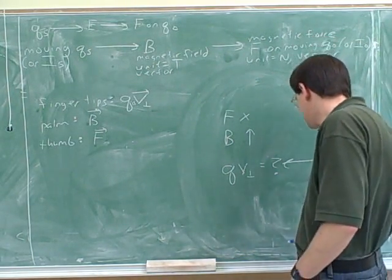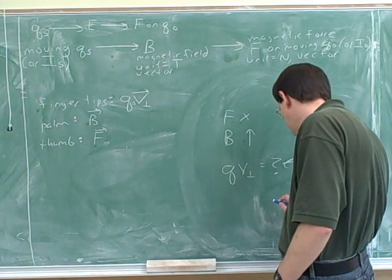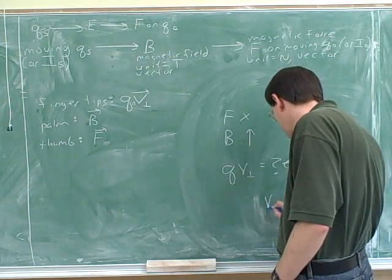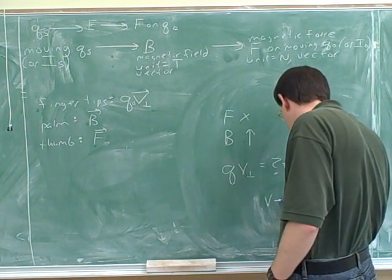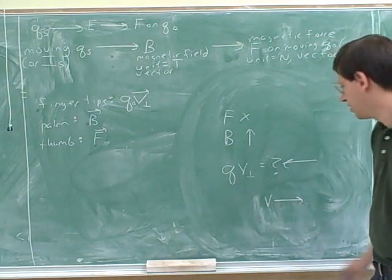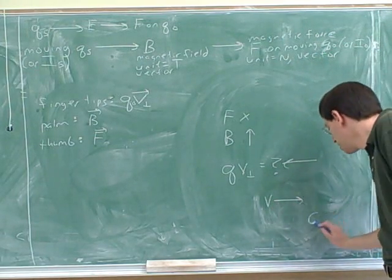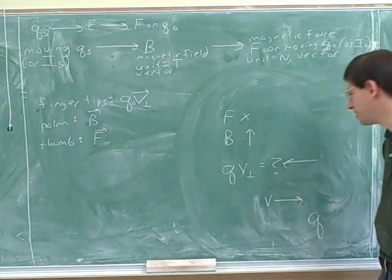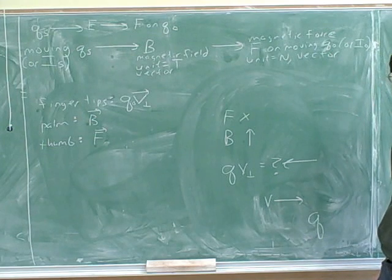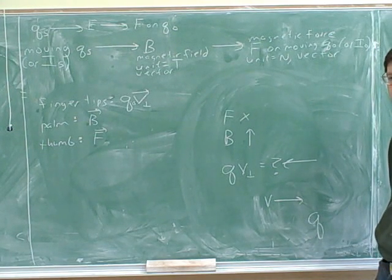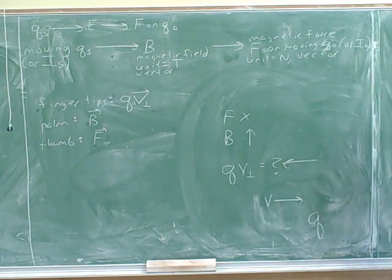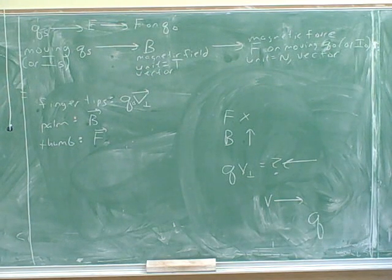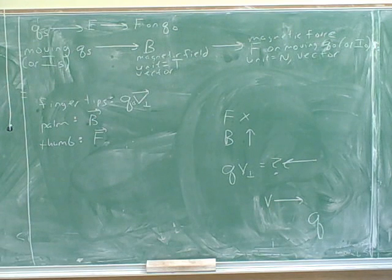Now, suppose I tell you that V is to the right. Does that mean we have a positive test charge or a negative test charge, for this same problem? It means we have a negative test charge. How would we work that out on paper?